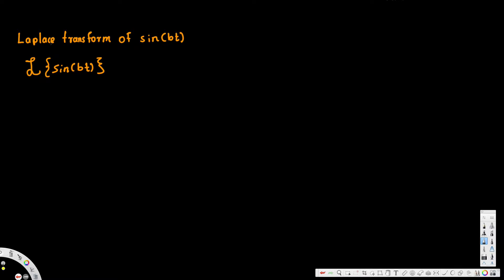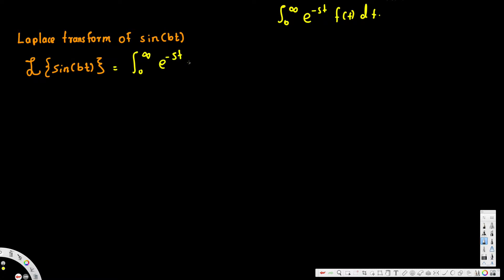In this video we are going to find the Laplace transform of sin(bt). To find this, first we write the generic equation: the integral from 0 to infinity of e to the power of negative st times f(t) dt. In our case, f(t) is sin(bt), so we replace f(t) with sin(bt) and perform the integration.